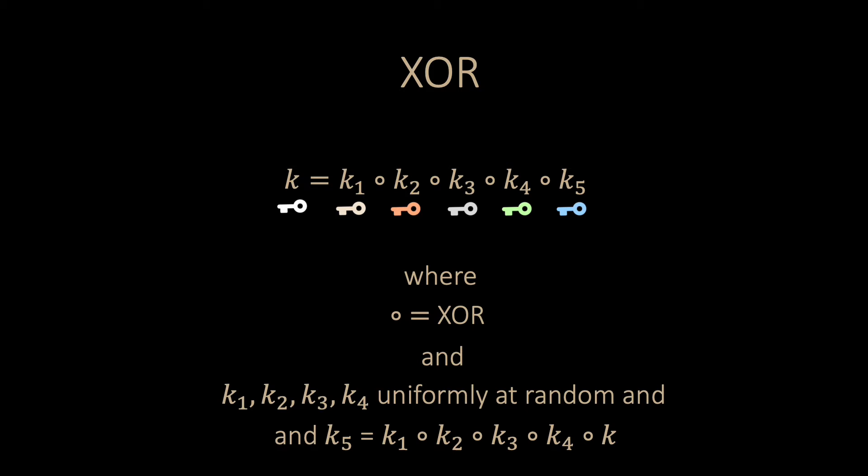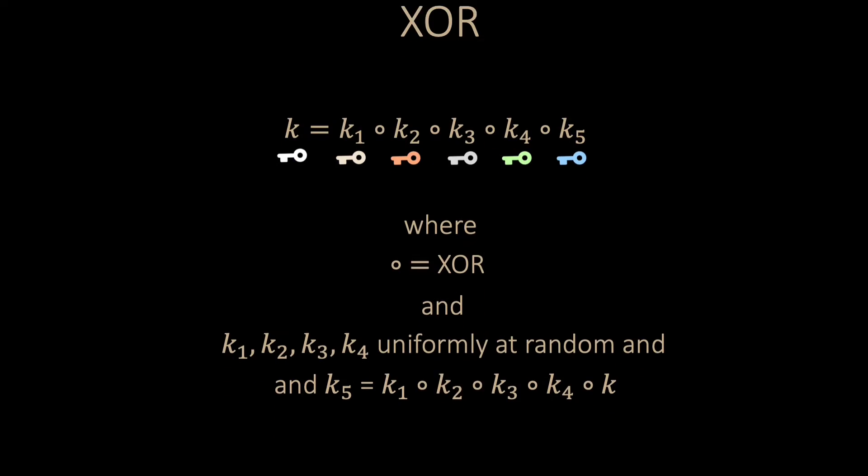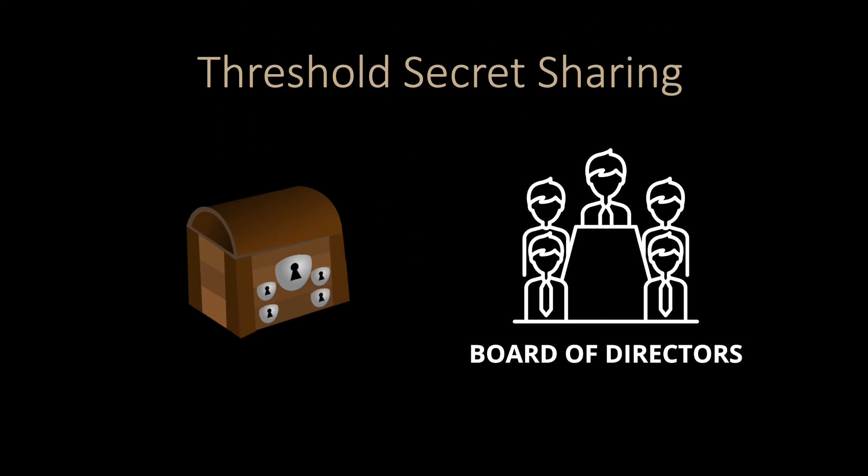However, a key may get lost, and it might be better if a majority of directors can also open the safe. This is where threshold secret sharing can be used. Here, a threshold T can be any value, not necessarily a majority. So, how does threshold secret sharing work?